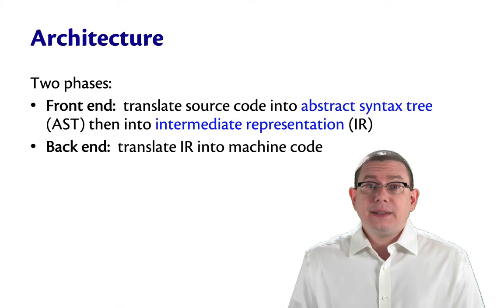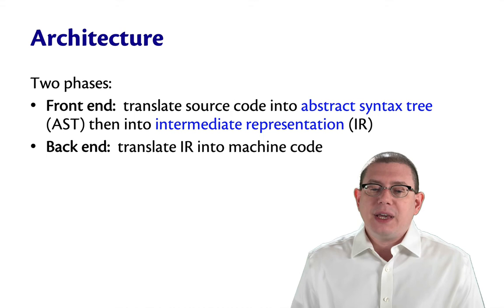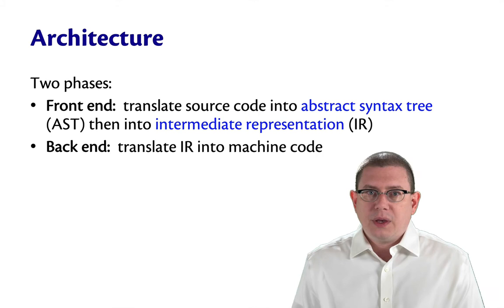Then, typically, a front end will go on and do some transformations to that AST. In fact, it'll typically rewrite it a few times, maybe even many times, into progressively simpler and simpler kinds of representations of the program. Those are called intermediate representations, or IRs.